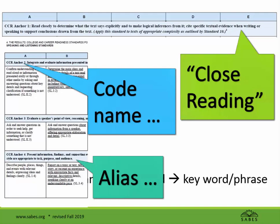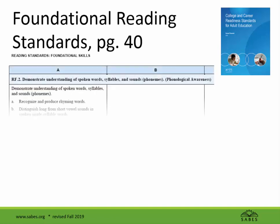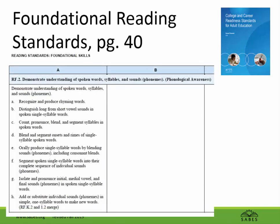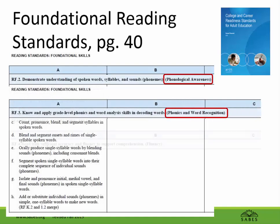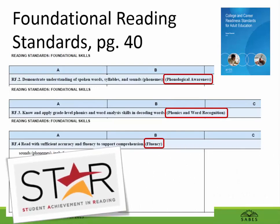As you flip through the ELA standards, you'll come to the foundational reading standards on page 40. There are already five levels A through E corresponding to grades K through 12. These foundational standards are about phonological awareness, phonics and word recognition, and fluency — in other words, the mechanics of actually being able to read. These foundational reading standards go along with ELA reading levels A, B, and C, and also fit with the STAR Reading Initiative that is strongly recommended for teaching students at the grade level equivalent range of four through eight.